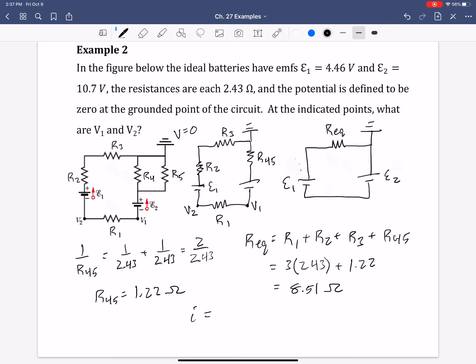Right? So the current, I, using Ohm's law, is now the total voltage. So E1 plus E2 over R equivalent. And then E1 is 4.46, and E2 is 10.7. So the current, much larger voltage, all over 8.51, gives us a current of 0.743 amperes.